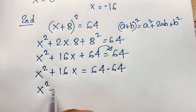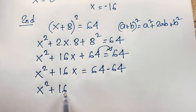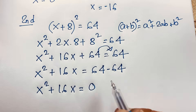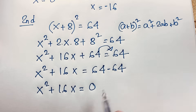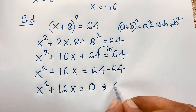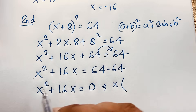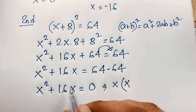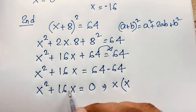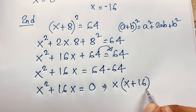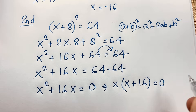So x² + 16x = 0, because 64 − 64 = 0. Now, x is common, so factoring out x gives: x(x + 16) = 0.